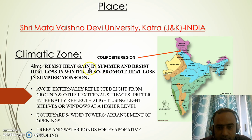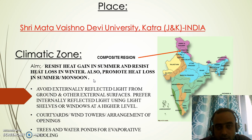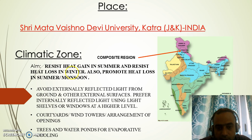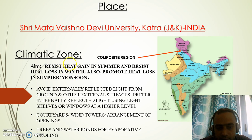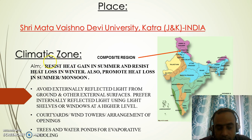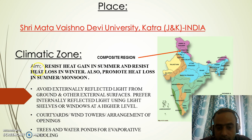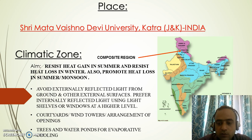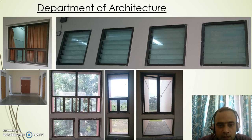For the composite climate region in which this campus is located, the guidelines require: resisting heat gain in summer, resisting heat loss in winters, and promoting heat loss in summers and monsoons. We should avoid externally reflected light from the ground and other surfaces, promote courtyards and wind towers, and arrange windows, trees, and water ponds simultaneously — evaporative cooling can also add to indoor comfort.